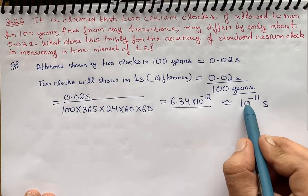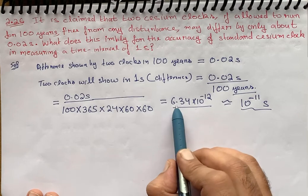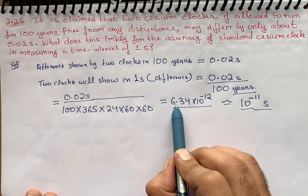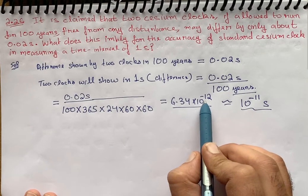So approximately we can say that 10 raised to power minus 11 seconds is the difference between the two clocks per second. I have used significant figures here - six is greater than five, so approximately it's 10 raised to power minus 11.